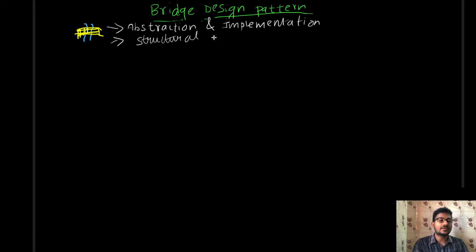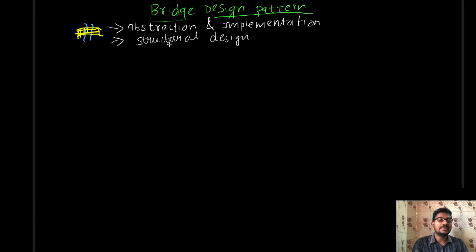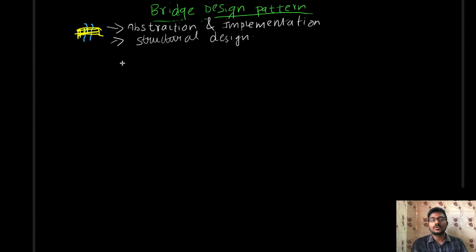The bridge design pattern comes under the structural design pattern category, which is one of the three important categories of design patterns. The main concept and motto of the bridge design pattern is to allow abstraction and implementation to act independently — the abstraction layer can be written independently without knowing the implementation details, and the implementation can be written without knowing the abstraction details.